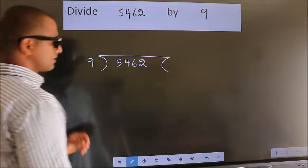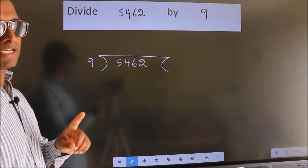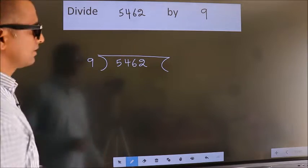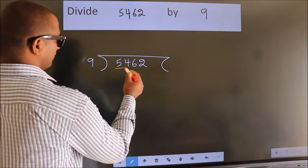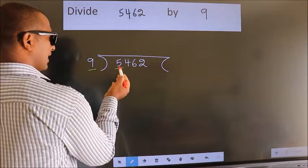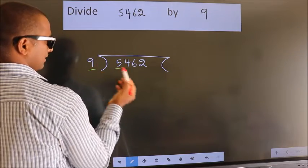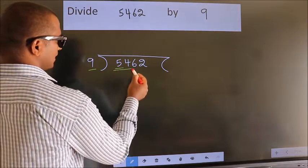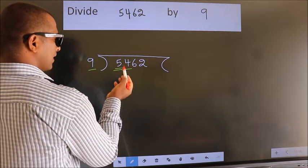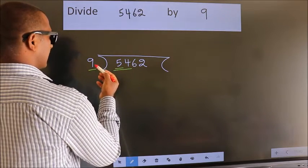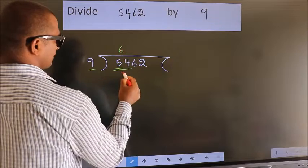This is your step 1. Next, here we have 5. Here 9. 5 smaller than 9, so we should take 2 numbers, 54. When do we get 54? In 9 table: 9, 6, 54.